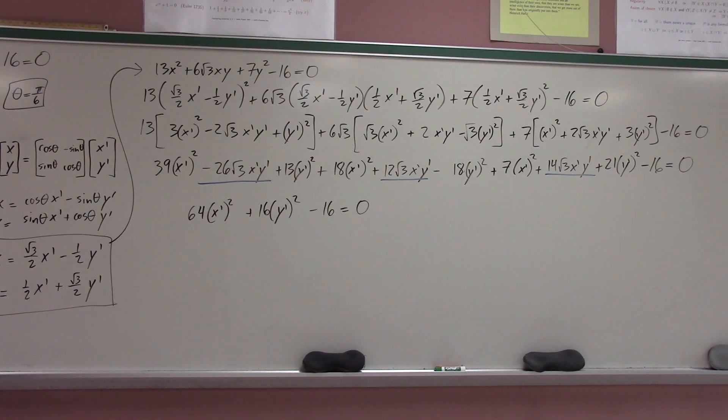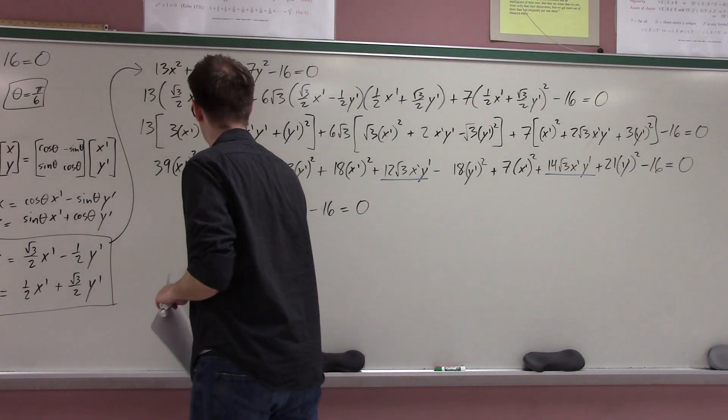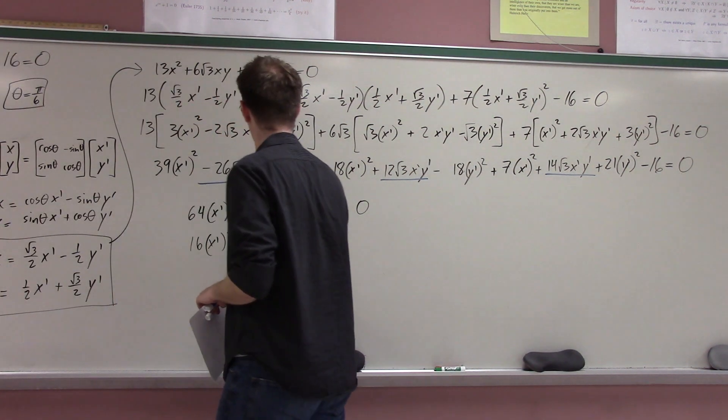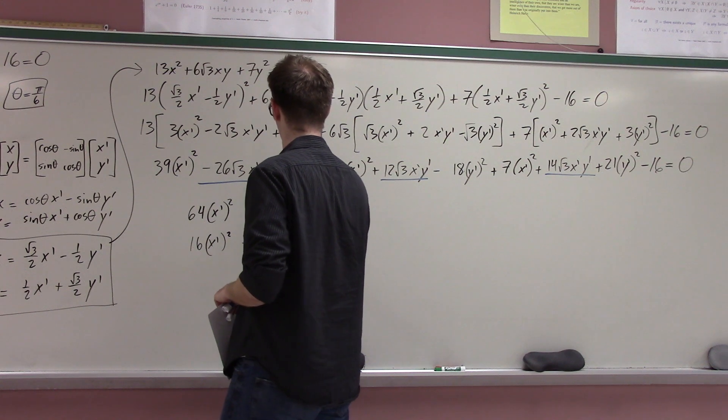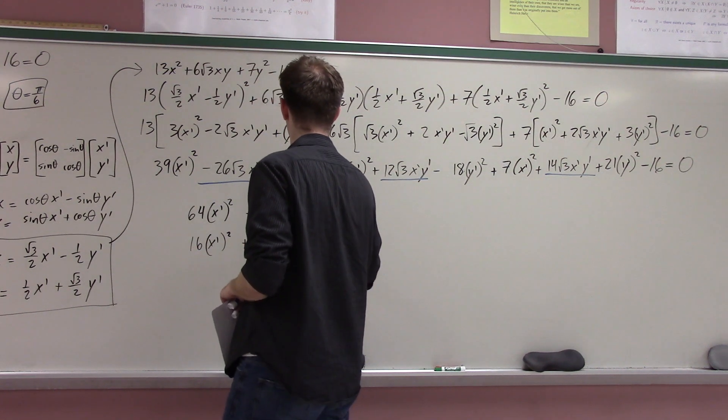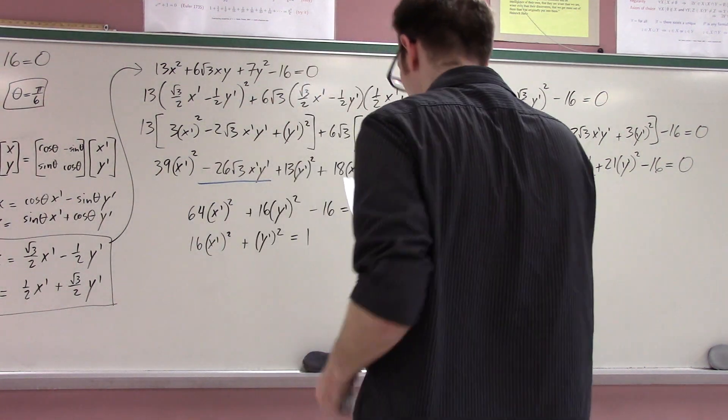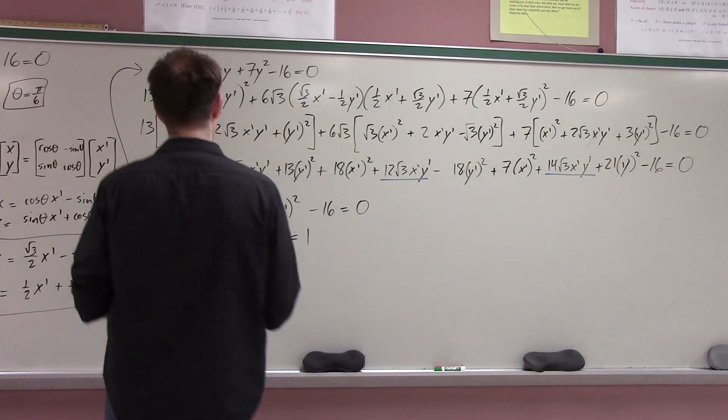And okay so what are the sum of my y prime terms it's 13 21 34 minus 18 that's like 16 so plus 16 y prime squared and then that's it right minus 16 equals zero okay. So yeah divide through by 16 and you get 16 x prime squared oh this song really rocks.